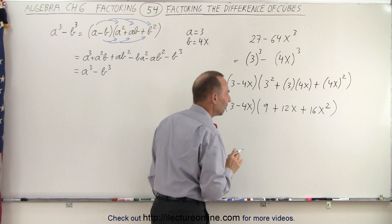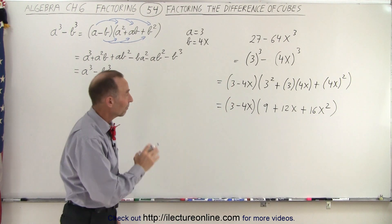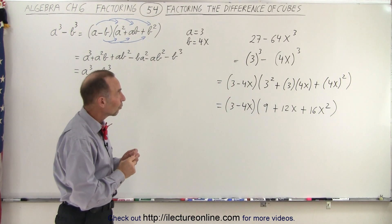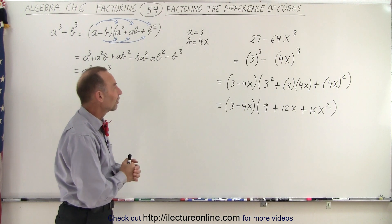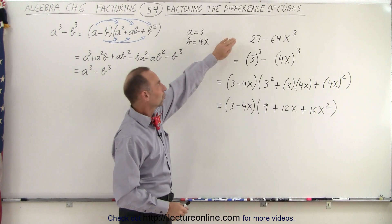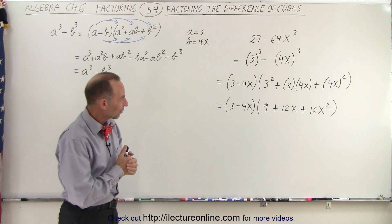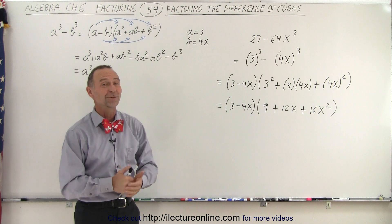Now quickly, let's see if we can factor anything out. Doesn't look like we can, and that's then the final form of that 27 minus 64x cubed, and that is then the final form of our original problem, 27 minus 64x cubed. And that is how it's done.